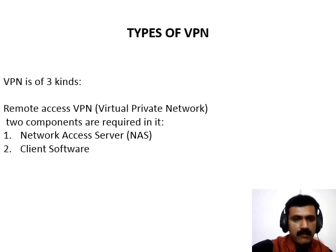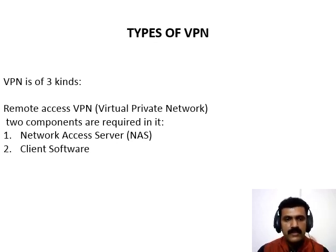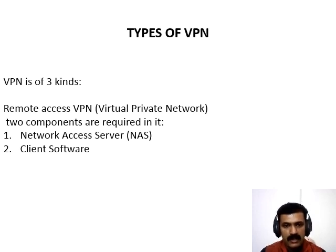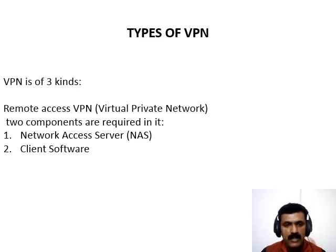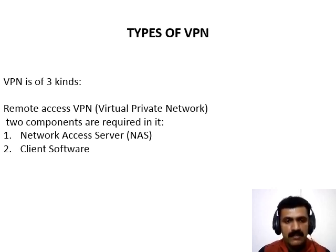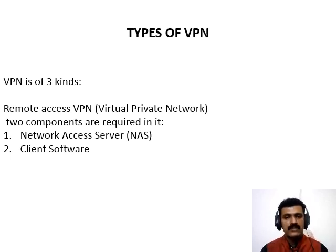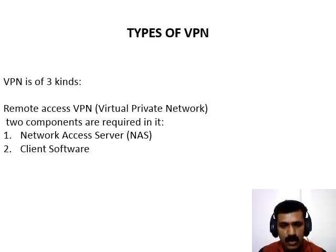Now let us understand VPN by example. Think of a situation where the corporate office of a bank is situated in Washington, USA. This office has a local network consisting of say 100 computers. Suppose another branch of the bank is in Mumbai, India and Tokyo, Japan. The traditional method of establishing a secure connection between head office and branch was to have a leased line between the branches and head office, which was very costly as well as a troublesome job.